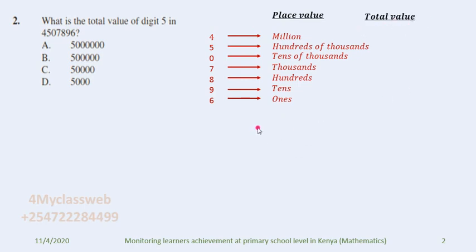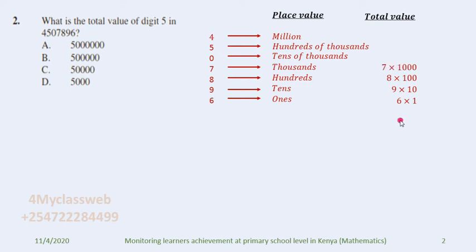Now with these place values, it is possible to get the total value of each digit. You take the digit and multiply it by its place value. For example, digit nine multiplied by tens gives its total value. Eight multiplied by a hundred, seven multiplied by a thousand, zero multiplied by ten thousand, five multiplied by a hundred thousand, and four multiplied by a million.